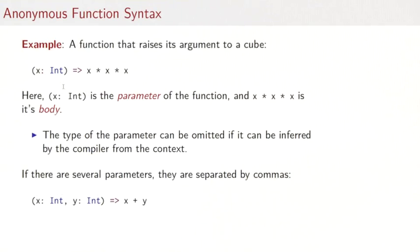Here's how we write an anonymous function. As an example, let's consider the function that raises its argument to a cube. It takes a parameter x of type int and then there comes an arrow and then comes the value of the function. In this case, x times x times x. So x colon int is the parameter of the function and on the right hand side of the arrow is the body.